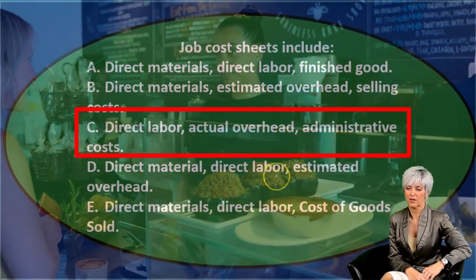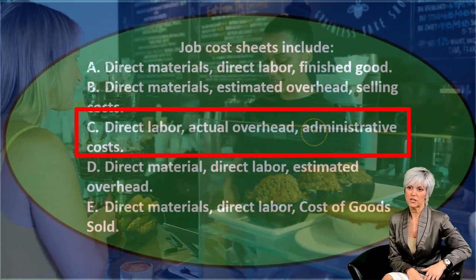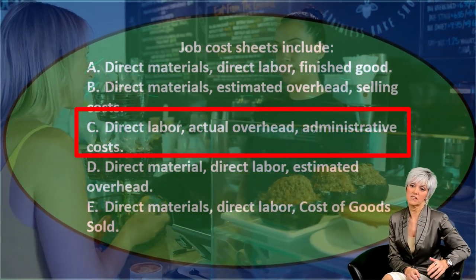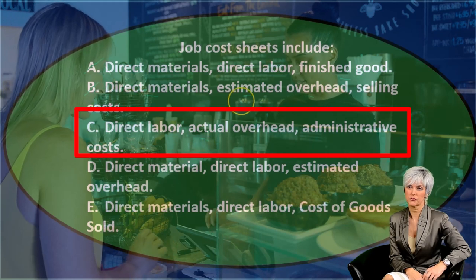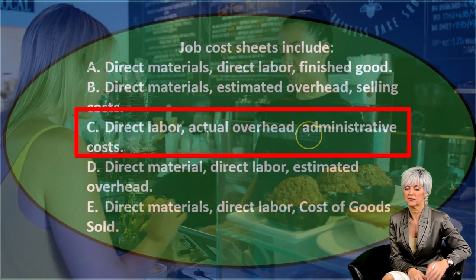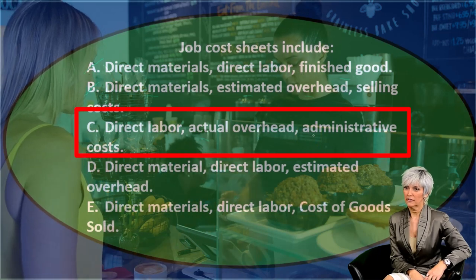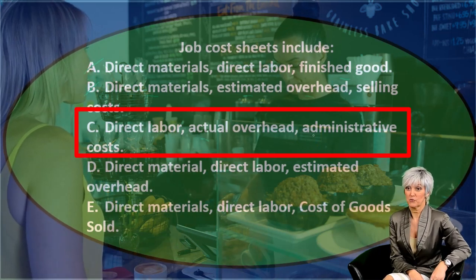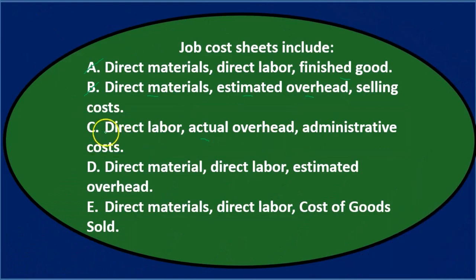C says direct labor, actual overhead, and administrative costs. Now we see two kinds of overhead — actual and estimated. But I can eliminate this one not based on that, but based on the fact that it includes administrative costs, which are period costs, not part of production, and therefore not on the job cost sheet. So it's not C.